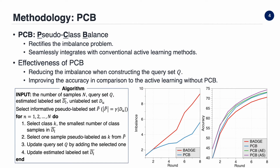To address this problem, we propose a novel method called PCB. PCB rectifies the imbalance problem and seamlessly integrates with conventional active learning methods. In the PCB algorithm, we first select the informative set P-hat using conventional active learning, where the size depends on gamma and the unlabeled set size. Through this process, we expect that P-hat will consist of examples that can help improve model performance.